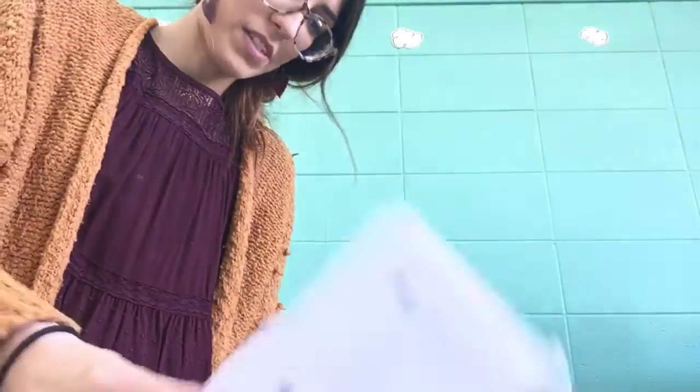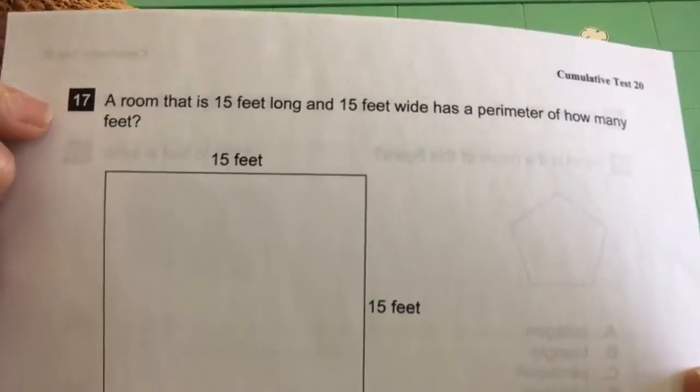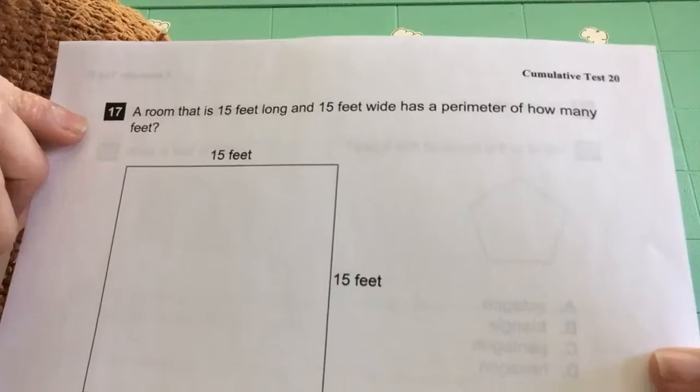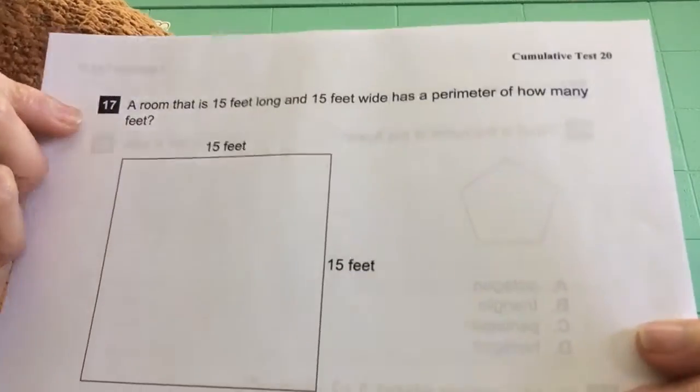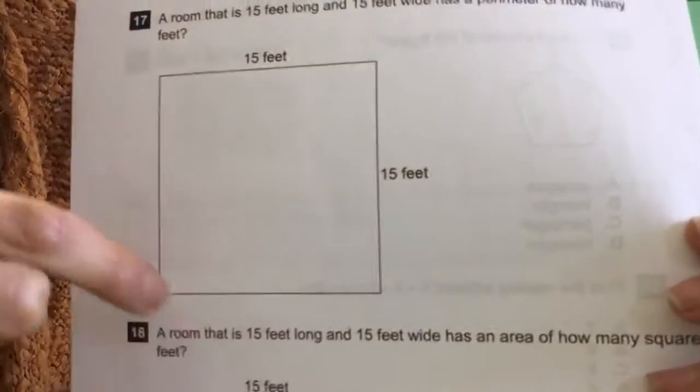All right, next. Let's see here, seventeen. Seventeen. We have a room that is fifteen feet long and fifteen feet wide. It has a perimeter of how many feet? We know what perimeter is. Adding all the sides. Good job.